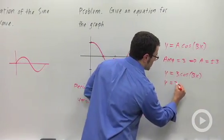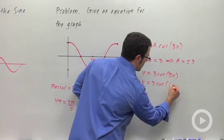And so my final answer is y equals 3 times the cosine of 1 half x.